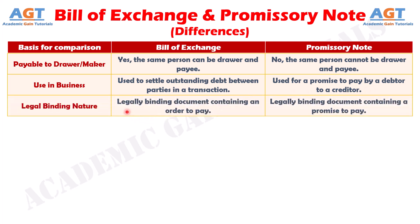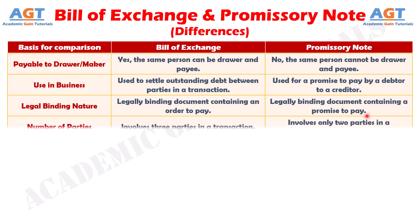Number eleven: A Bill of Exchange is a legally binding document containing an order to pay, whereas a Promissory Note is a legally binding document containing a promise to pay. Number twelve: A Bill of Exchange involves three parties in a transaction, whereas a Promissory Note involves only two parties.